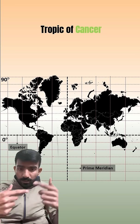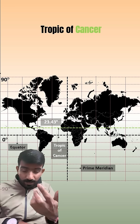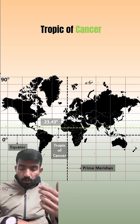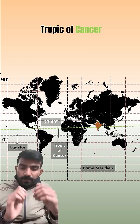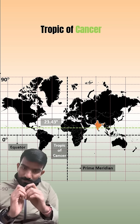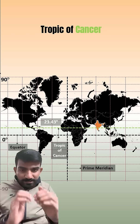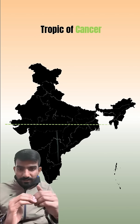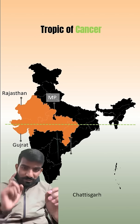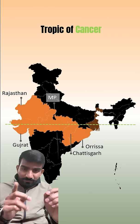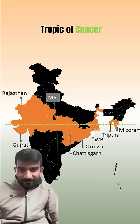Other than the equator and prime meridian, there is also another famous latitude called the Tropic of Cancer. And if you zoom in, you'll find out that the Tropic of Cancer passes through India and basically divides India into two parts. These are the states that it passes through. Is your state part of the Tropic of Cancer? Let me know in the comments and I'll get back to you.